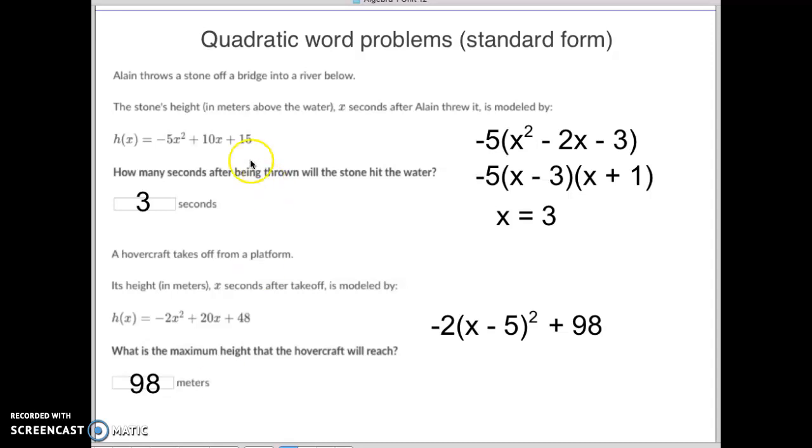Not too difficult. You just got to realize what is it they're asking for and then find that. Sometimes you're going to go to factored form for it. Sometimes you want to go to vertex form to find that. Whatever you need to do to find those. That's all I got, guys. Bye-bye.